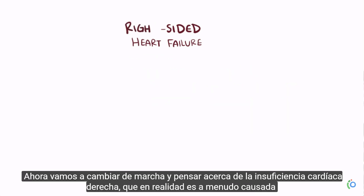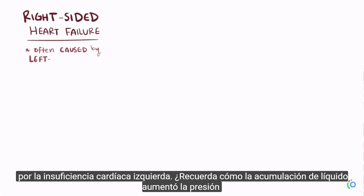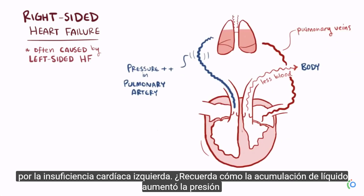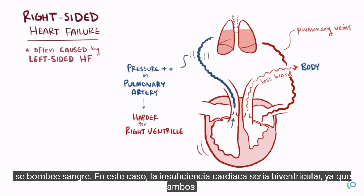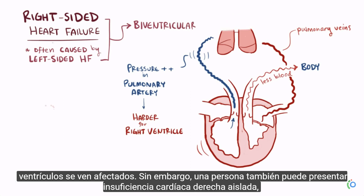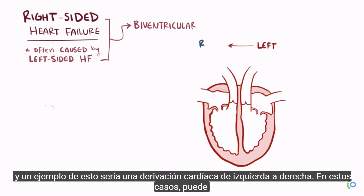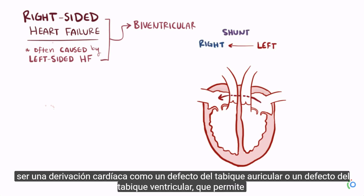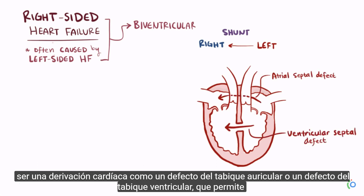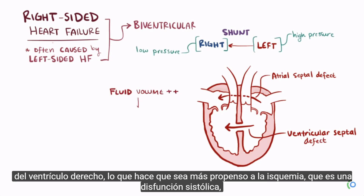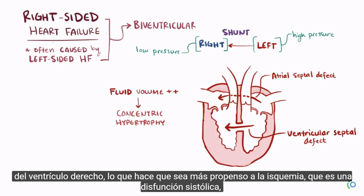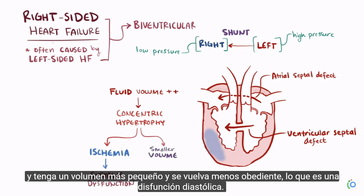Right-sided heart failure is often caused by left-sided heart failure. The fluid buildup increases pressure in the pulmonary artery, making it harder for the right side to pump blood into, resulting in biventricular heart failure. Someone can also have isolated right-sided heart failure — for example, a left-to-right cardiac shunt such as an atrial septal defect or ventricular septal defect allows blood to flow from the higher-pressure left side to the right side, increasing fluid volume on the right, eventually leading to concentric hypertrophy, ischemia as a systolic dysfunction, and reduced compliance as a diastolic dysfunction.